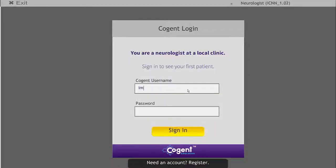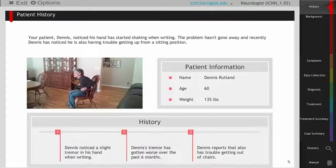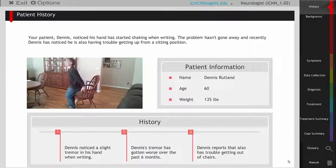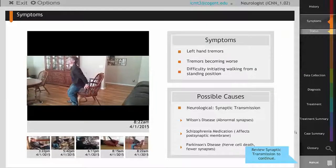In Cochin's synaptic transmission case, students act as a neurologist to learn and apply the concepts of synaptic transmission. Their patient is Dennis, a man who has been experiencing tremors and other problems with his motor control.